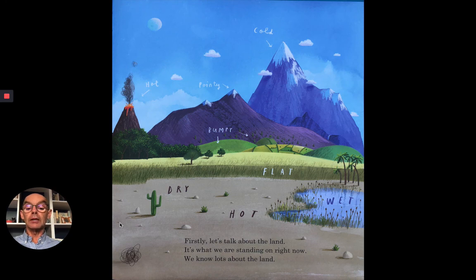Firstly, let's talk about the land. It's what we are standing on right now. We know lots about the land. Some of it's hot and dry. Some of it's wet or flat. There's bumpy land. There's hot volcanic land. There's pointy mountains and very cold tops of mountains.